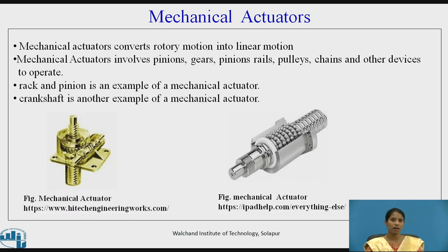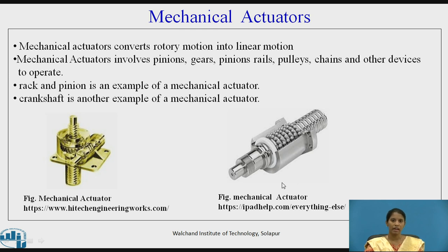The rack and pinion is an example of mechanical actuators where rotary motion is converted into linear motion. The figures also show other mechanical actuators in which mechanical equipment is involved to produce the mechanical actuation process.